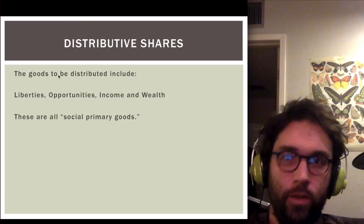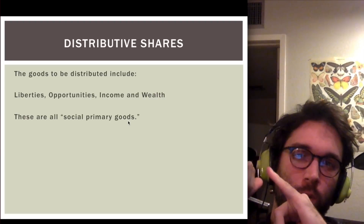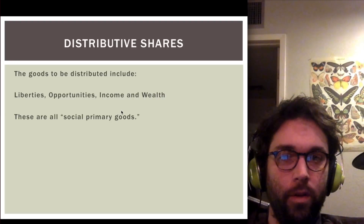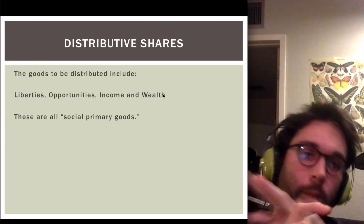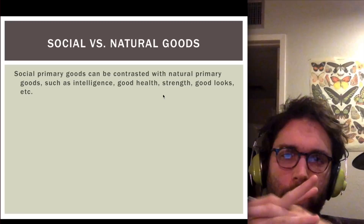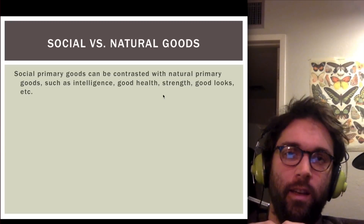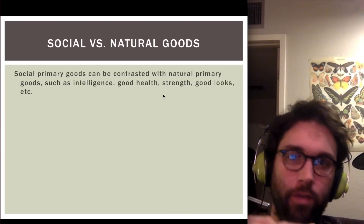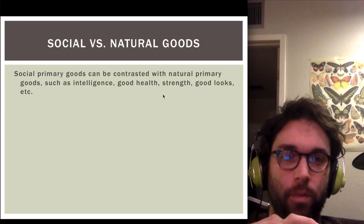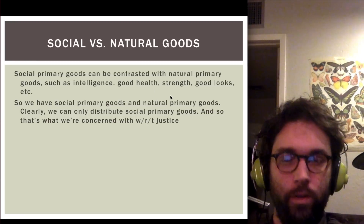The goods we're talking about that these institutions distribute include liberties, rights, opportunities — who's entitled to run for public office, hold certain positions in government, be hired for certain jobs — and of course income and wealth. These are called social primary goods. They can be contrasted with natural primary goods, which are things like intelligence, good health, strength, and good looks — things distributed naturally, not socially.